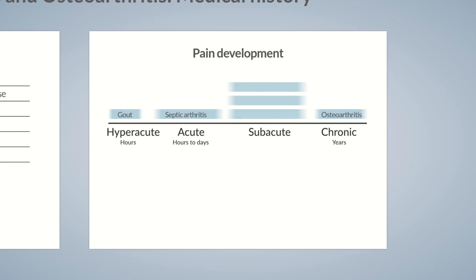However, most arthritides develop comparatively slower, usually from weeks to months. Examples are rheumatoid arthritis, connective tissue diseases including systemic lupus erythematosus, and spondyloarthropathies. In such cases, patients usually can't specify the exact starting point. In contrast, patients with gout are sometimes able to pinpoint the exact time of pain onset. So, time course can also be used to narrow down a particular condition.